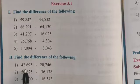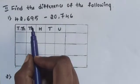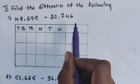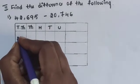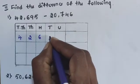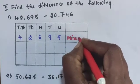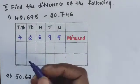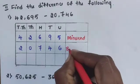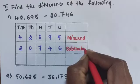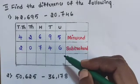Find the difference of the following. Question number 1: 42,695 minus 20,746. Arrange the digits of the minuend and subtrahend in place value columns. 42,695 is the minuend and 20,746 is the subtrahend. Then find the difference.